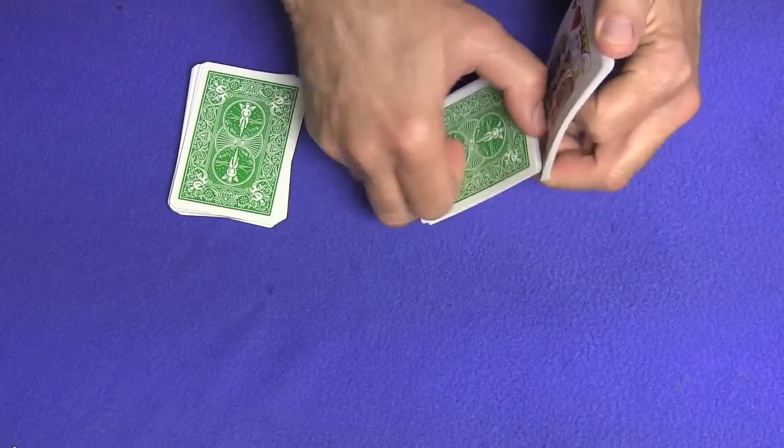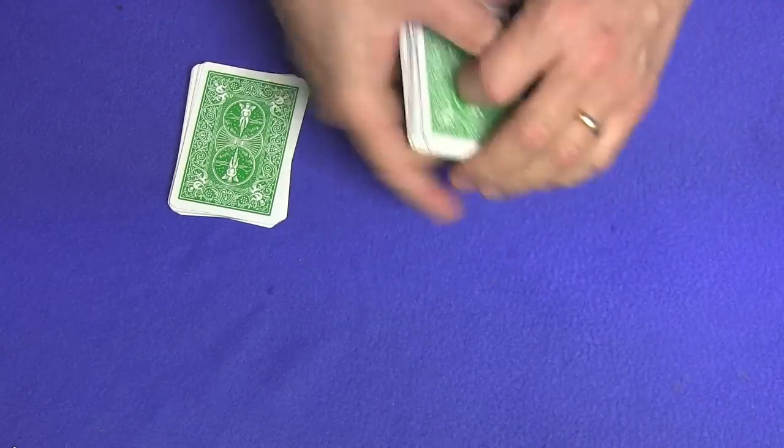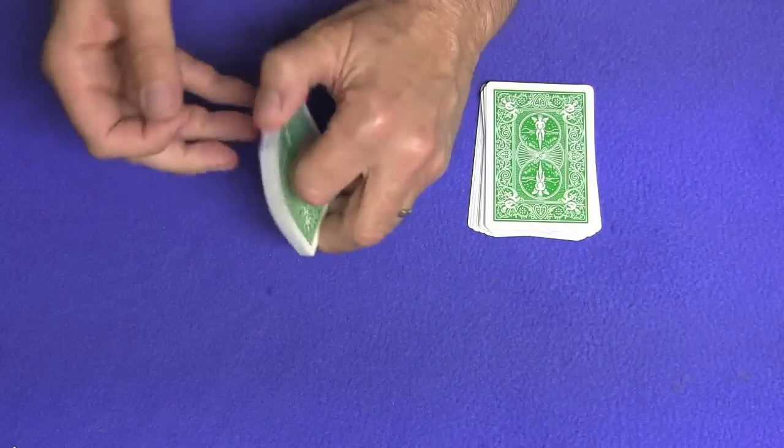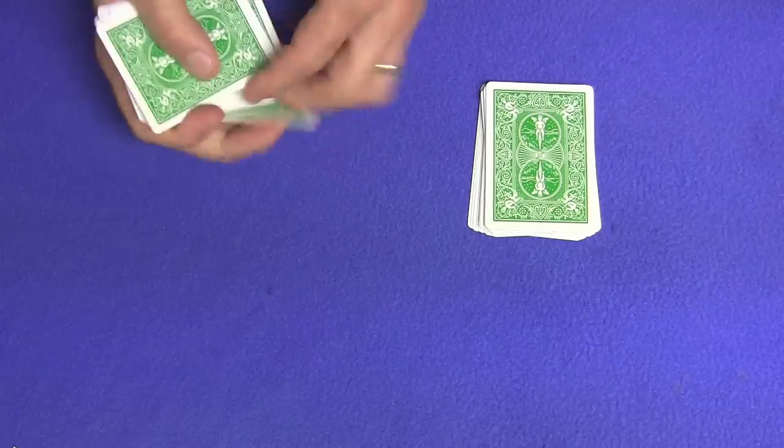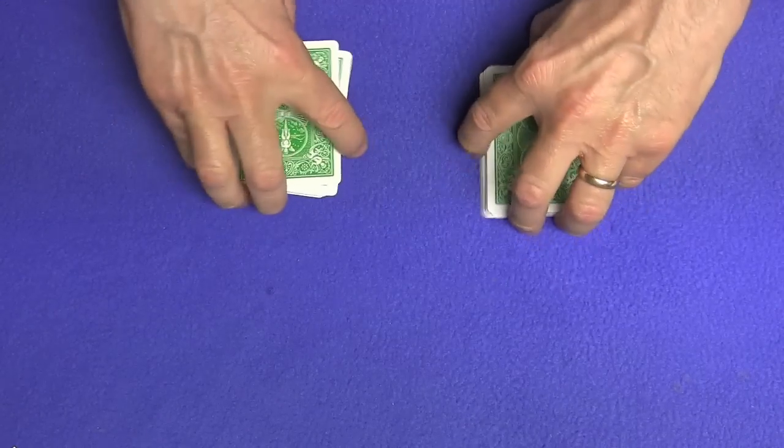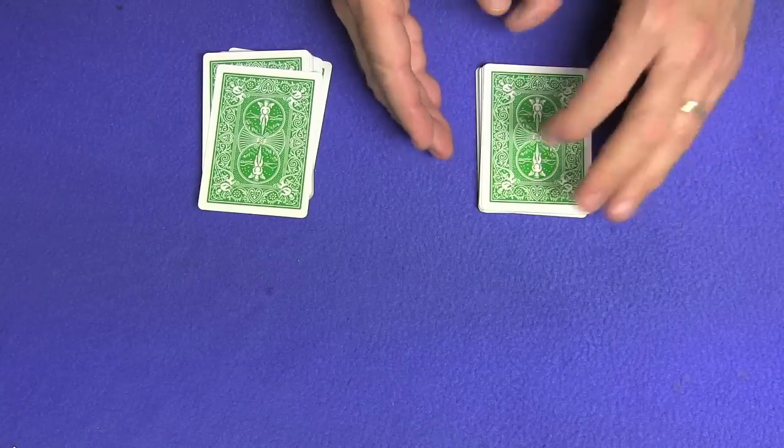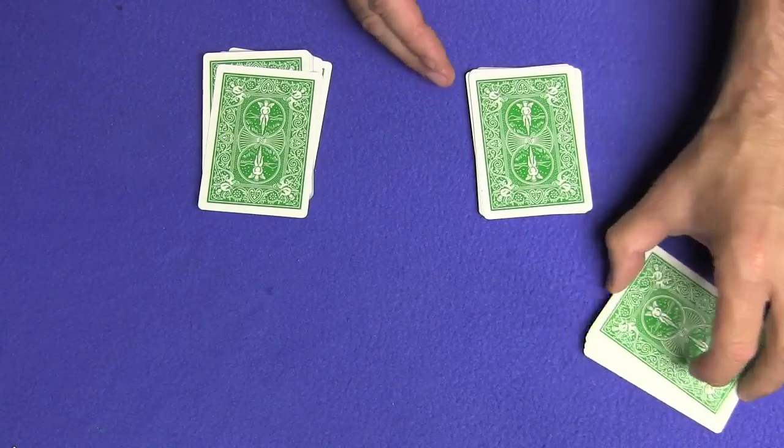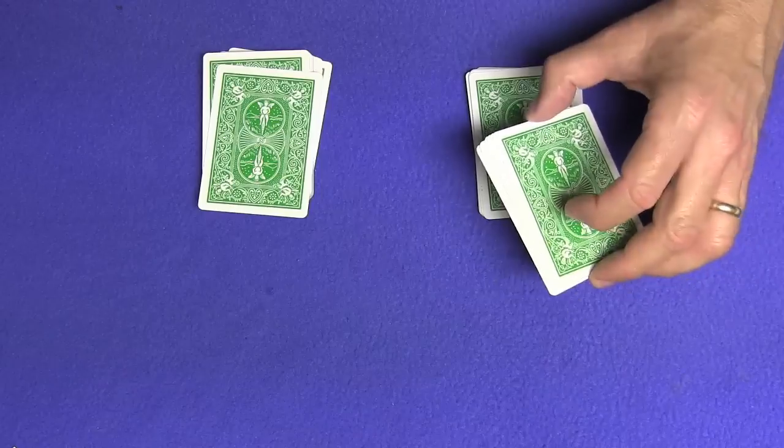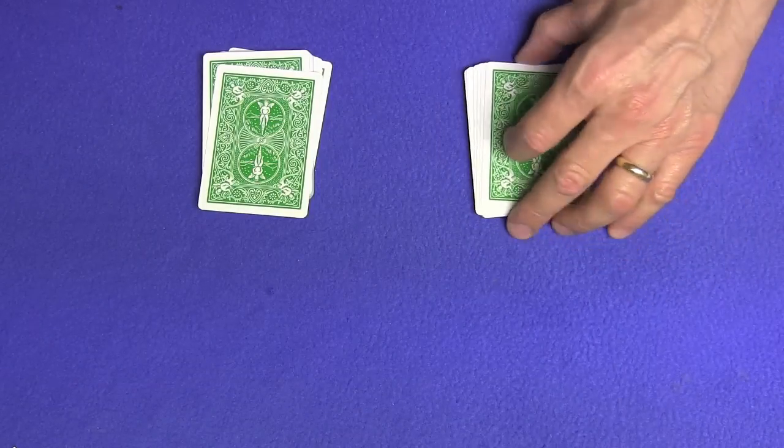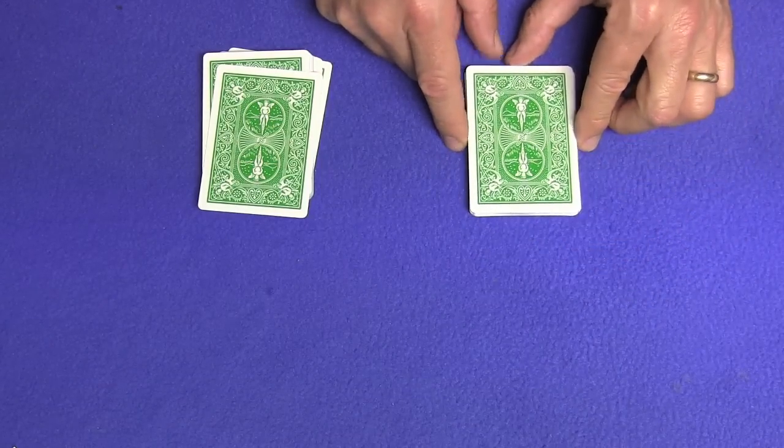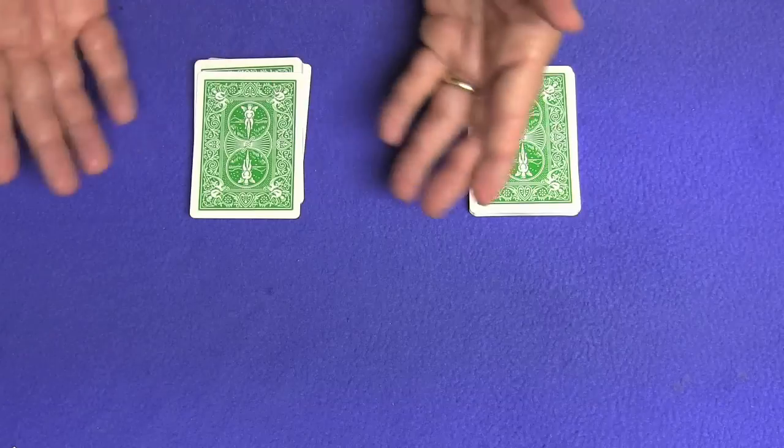You can give a spectator two halves of a deck and have them mix the cards. When they're done mixing, one pile will be for them to choose a number of cards, and that will represent the position down from the top of the deck that the chosen card will be in. The other pile they're going to freely select a card.